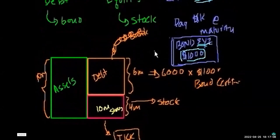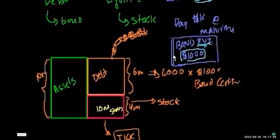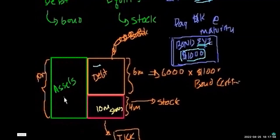Bonds are traded just like stocks, but there's a fundamental difference in what the holder is doing. If I hold a $1,000 bond, I've lent money to the company, and as long as they don't go bankrupt, they'll pay me interest and return my principal. When I own stock, I own a share of equity — the company isn't promising to pay anything back; it's saying you are a part owner and will share in whatever the owners receive.